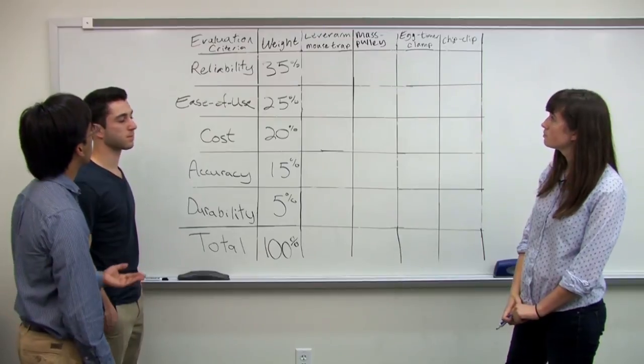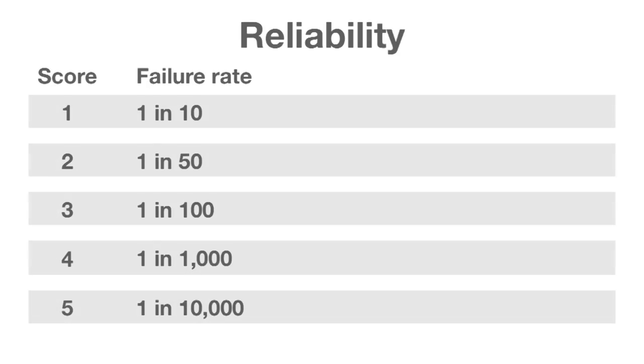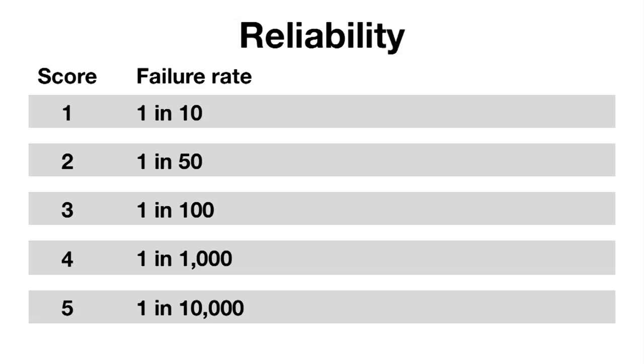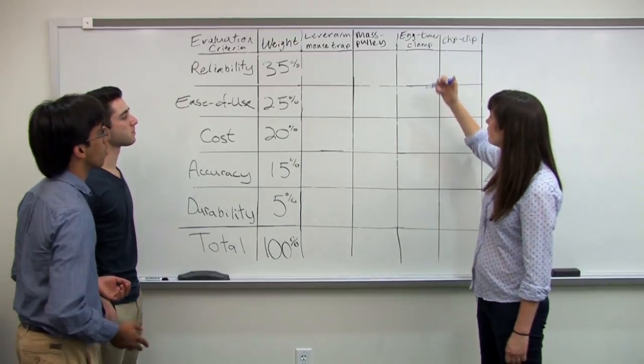So looking at reliability, our first criterion, we previously agreed that a standard would be a device that has a failure rate of one in a hundred times, which might be the egg timer. And so we will assign it a score of three.